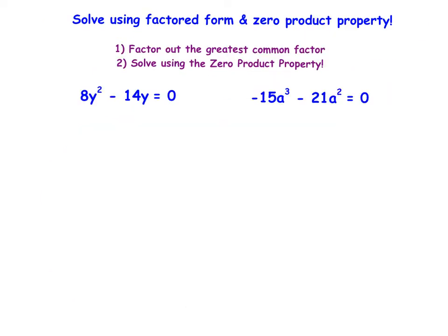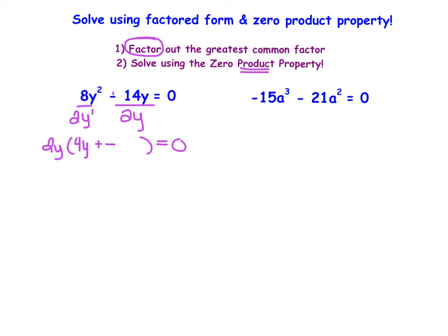Let's practice with a couple more examples. Remember, we need to factor first to turn this into a product where we can utilize the zero product property. Looking at these two terms, they're both divisible by at least 2 and both contain at least one y. So their greatest common factor is 2y. Using keep-change-change: negative 14 divided by 2 is negative 7, and the y's cancel.